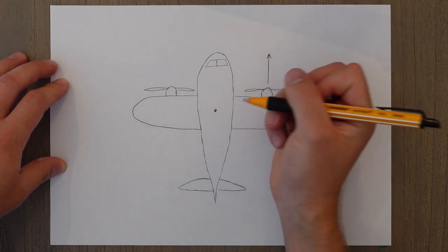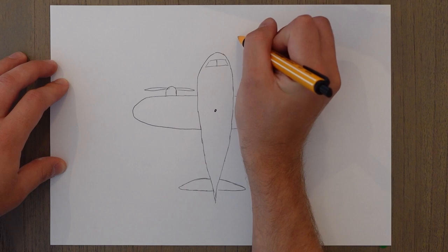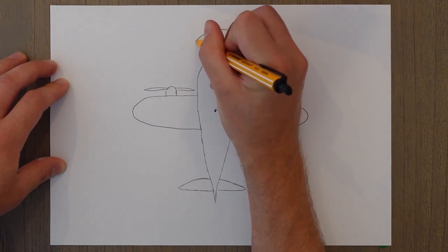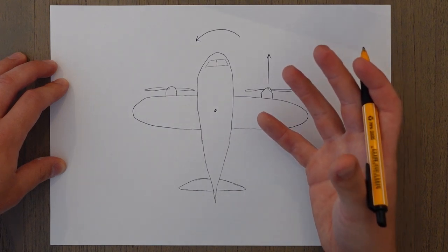This creates a yawing moment around the centre of gravity and in this case here, it'll yaw us to the left, aka it yaws us towards the dead engine.